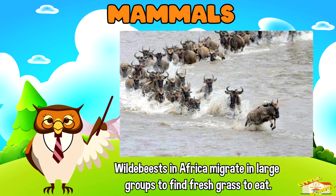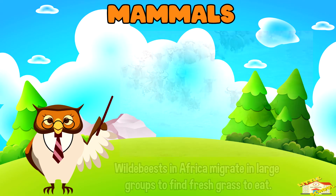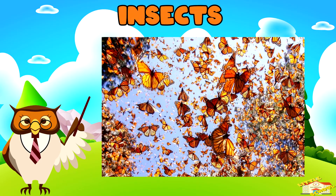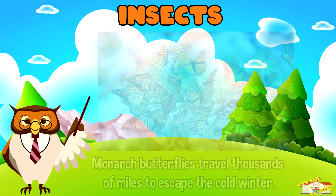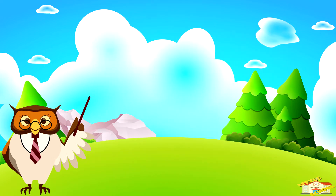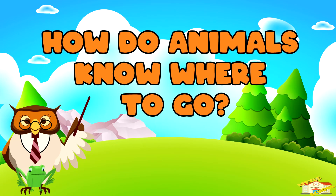Mammals: wildebeest in Africa migrate in large groups to find fresh grass to eat. They move in a big circle every year, following the rain. Insects: monarch butterflies travel thousands of miles from Canada and the United States to Mexico to escape the cold weather.